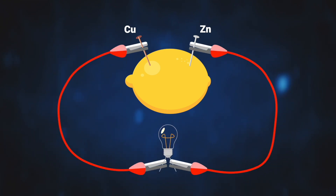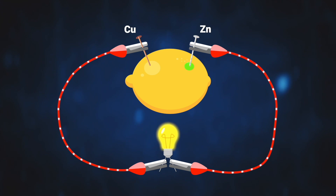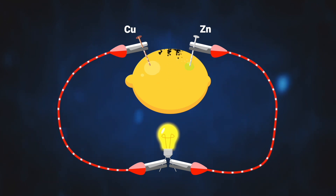When connected, the zinc rod chemically reacts with the acidic lemon juice and begins to dissolve. This reaction results in the release of electrical energy in the form of electrons into the zinc rod. These electrons travel through the circuit and can illuminate an LED light. When the electrons arrive at the copper rod, they combine with hydrogen ions contained in the lemon juice to form hydrogen gas bubbles.